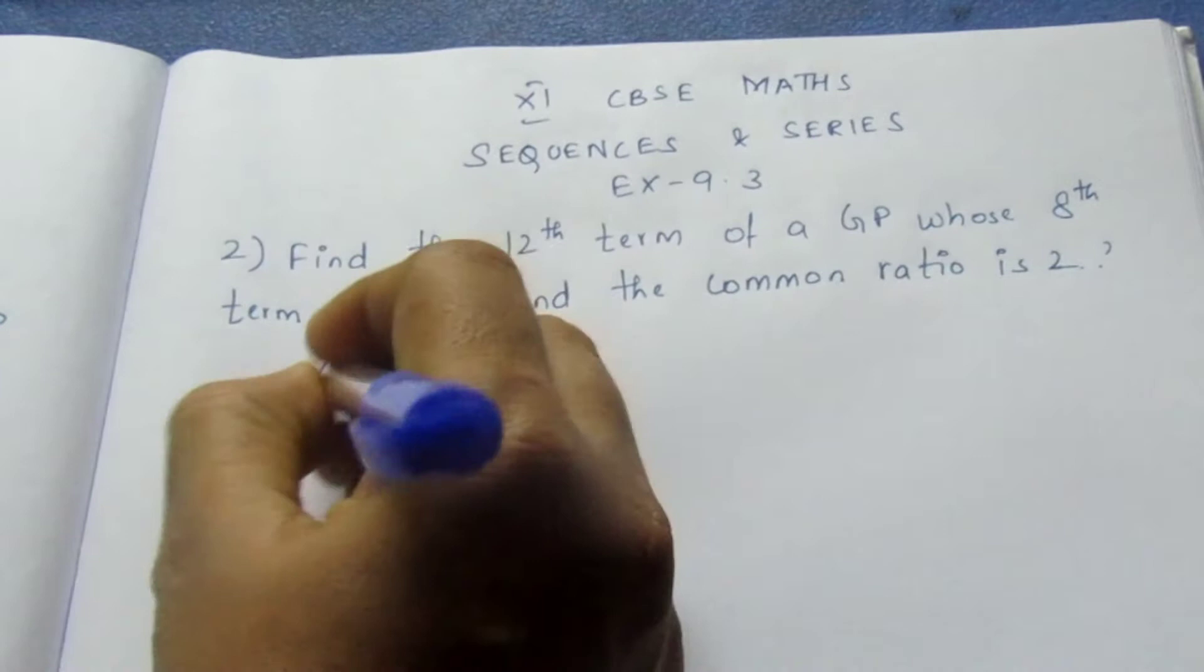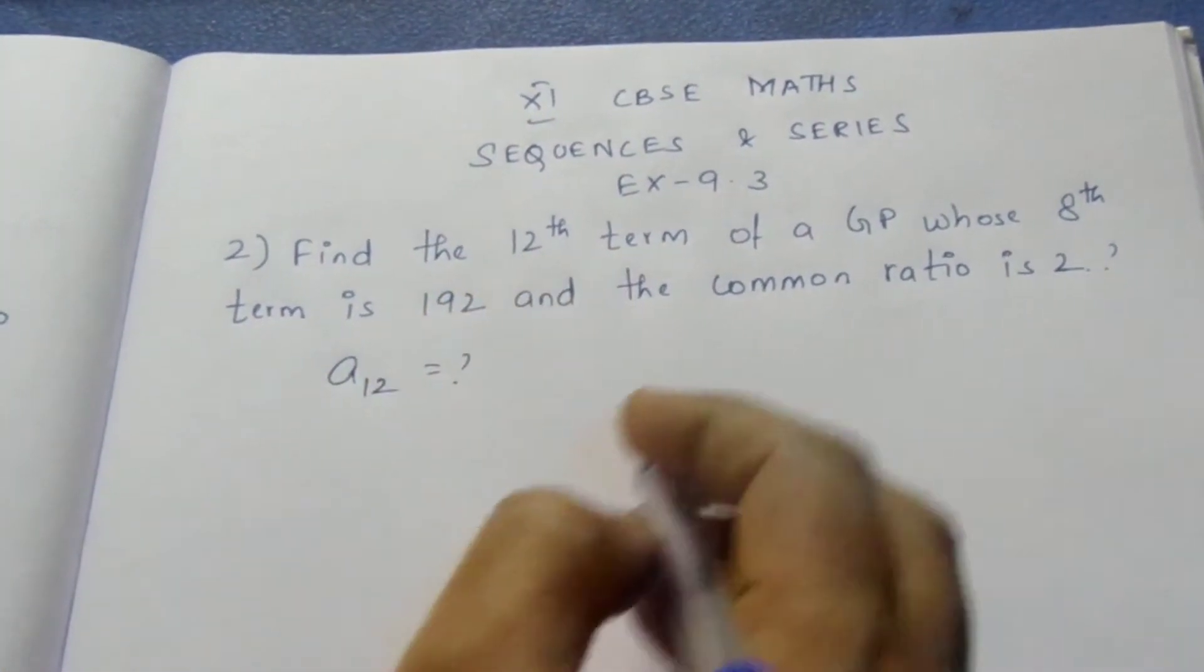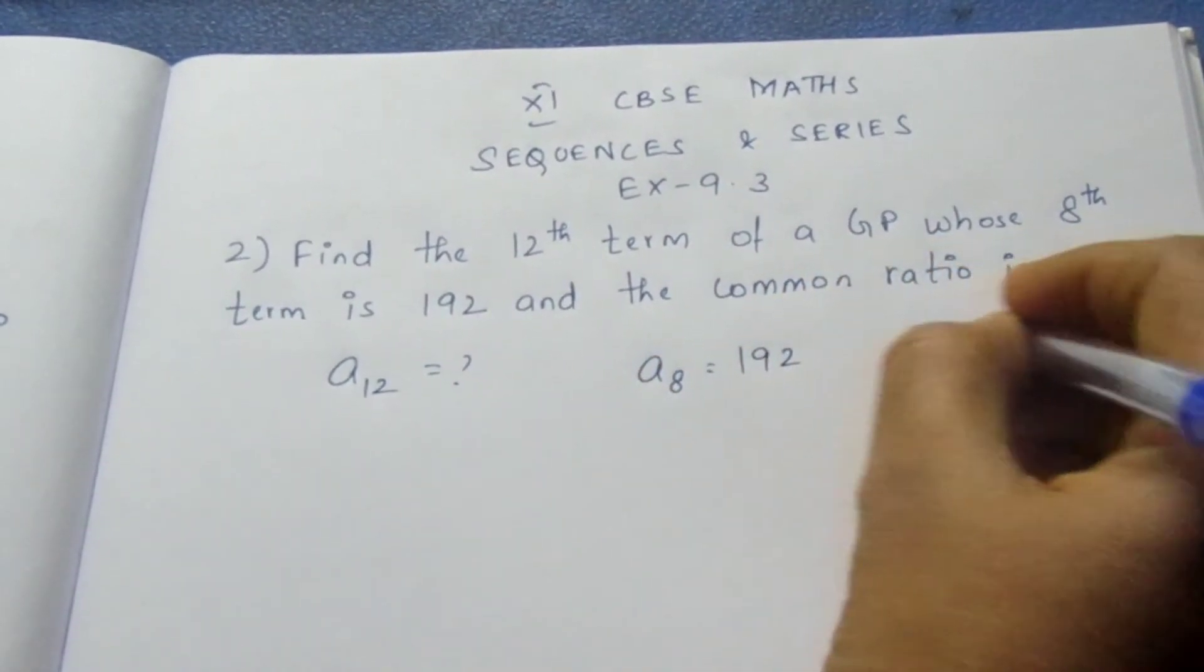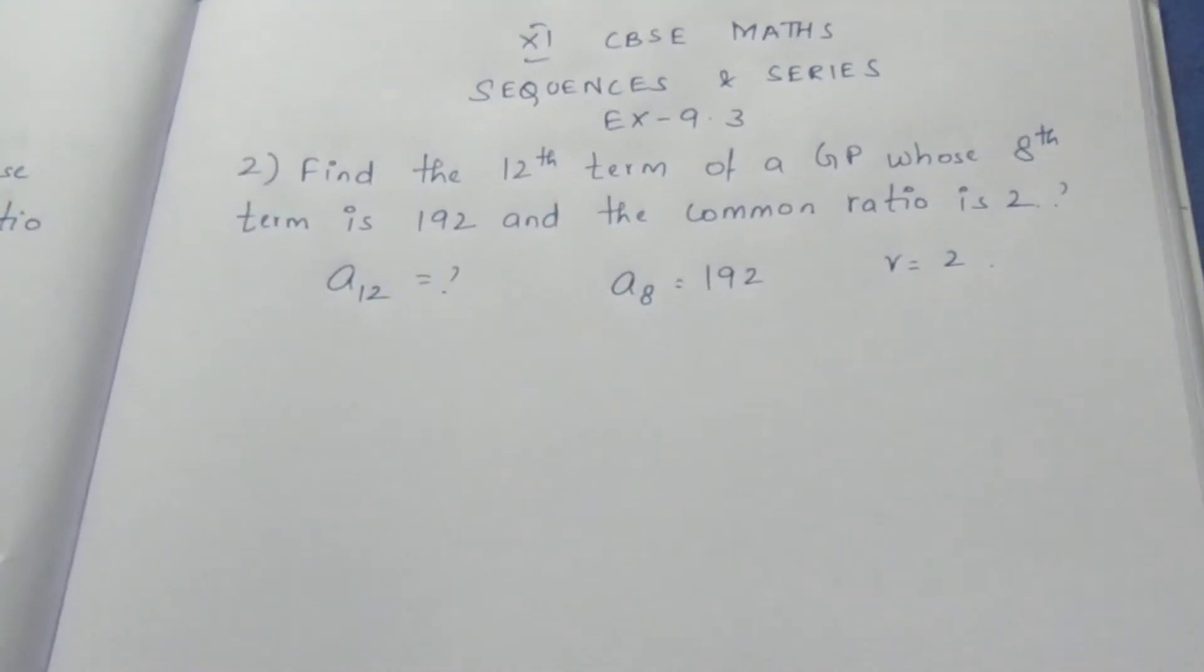So they have asked us to find A12. The 12th term is asked. They have given A8 to be 192 and R, the common ratio, to be 2. This is all the given information.